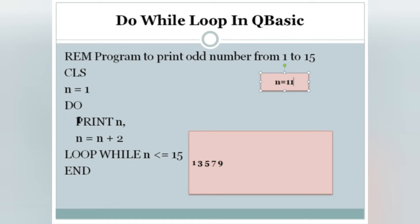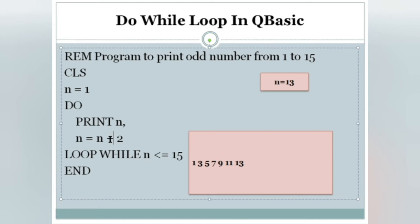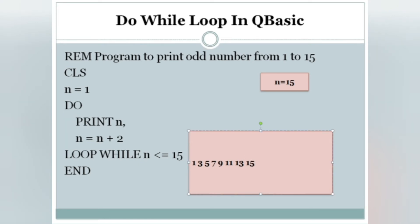N equals N plus 2: 11 plus 2 is 13. It checks the condition — 13 <= 15, condition true. It goes to DO and prints N — value is 13. Then N equals N plus 2: 13 plus 2 is 15. LOOP WHILE N <= 15: 15 <= 15, condition is true. It goes to DO again and executes PRINT N — 15 is printed. So we got all the odd numbers from 1 to 15.